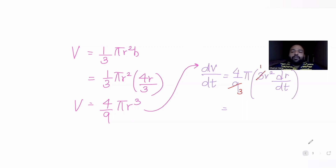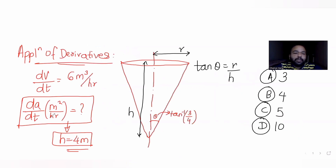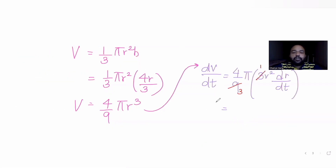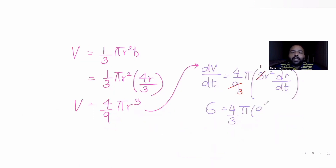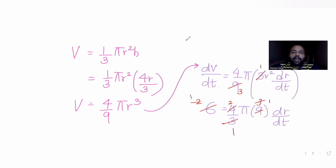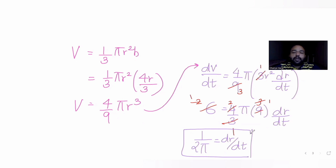The change in volume with respect to time is given as 6 cubic meters per hour. So 6 equals (4/3)π r² dr/dt. We know when height is 4 meters, radius is 3 meters, so r² equals 9. Substituting and solving, we get dr/dt equals 1/(2π). This is our change in radius with respect to time.